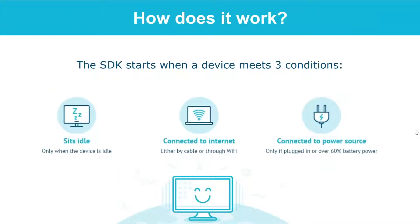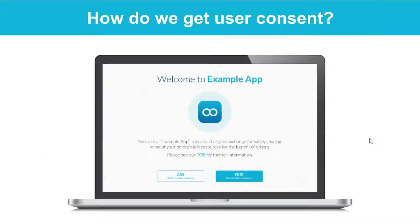To become a peer, three conditions must be met: the device must be idle or not in use, it has to be connected to the internet, and it has to be plugged into a power source or have battery power over 60%.